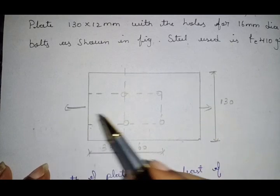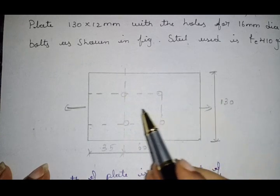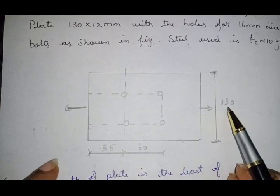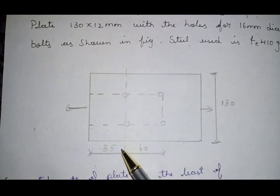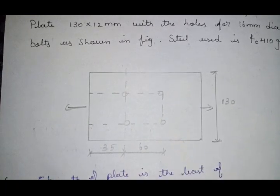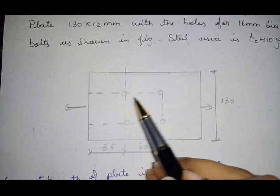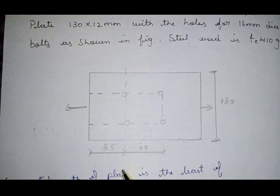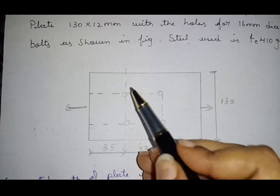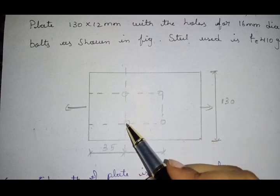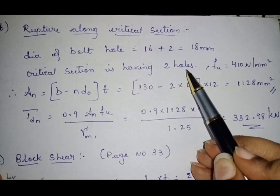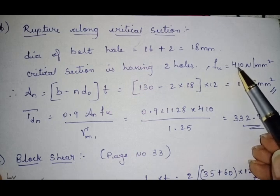The load is applied in one direction; rupture will be perpendicular to it. This is the critical section — you can take either side, but take the outer/end bolts. In the critical section, we have two number of bolts, so n = 2. fu = 410 MPa as given in the question.